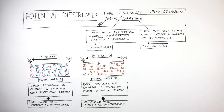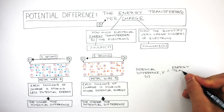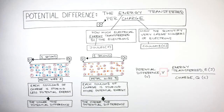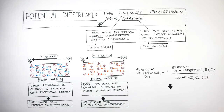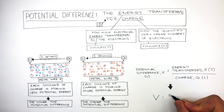We write this as: potential difference equals energy transferred divided by charge. The symbol of potential difference is a capital V, and the unit is volts, where the symbol is a capital V. The symbol of energy transferred is a capital E, and the unit is joules, where the symbol is a capital J. The symbol of charge is a capital Q, and the unit is coulomb, where the symbol is a capital C. We can write this equation just using the symbols, where V equals E over Q.